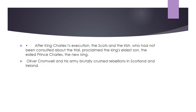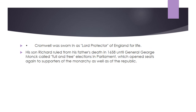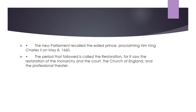After King Charles's execution, the Scots and the Irish, who had not been consulted about the trial, proclaimed the king's eldest son, the exiled Prince Charles, the new king. Oliver Cromwell and his army brutally crushed rebellions in Scotland and Ireland. Cromwell was sworn in as Lord Protector of England for life. His son Richard ruled from his father's death in 1658 until General George Monk called full and free elections in Parliament, which opened seats again to supporters of the monarchy as well as of the Republic. The new Parliament recalled the exiled Prince, proclaiming him King Charles II on May 8, 1660.